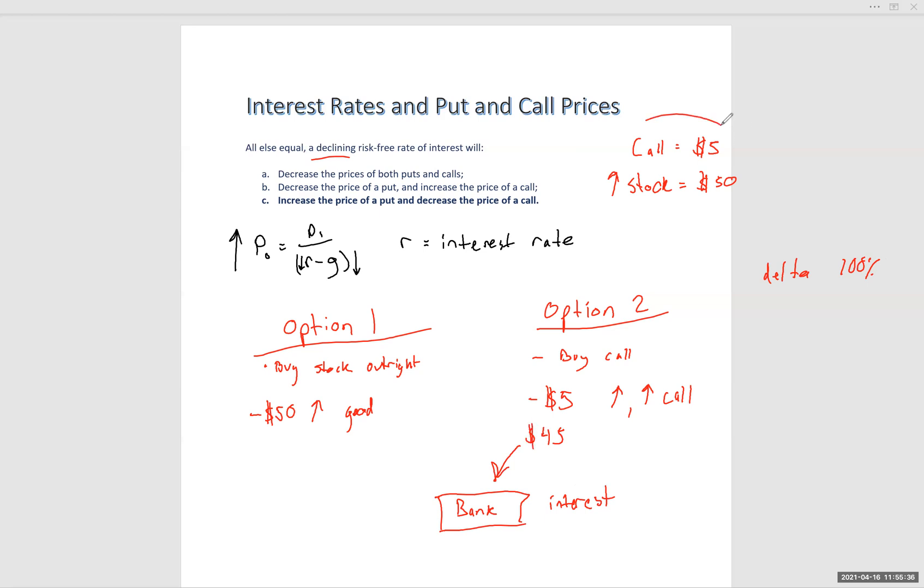So this is one of the major advantages of buying a call is that you have inherent leverage. You only have to pay $5 as opposed to $50 to control. Basically, maybe your delta is 90% or something like that. That means your option will be going up in value 90 cents for every $1 that the underlying goes up. So pretty close, pretty similar exposure to actually just buying the stock outright. So you have this money that's in the bank and it's earning interest.